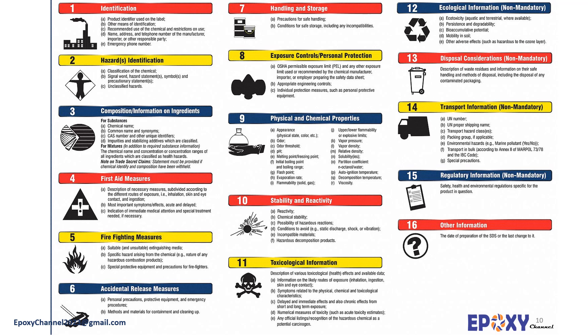Toxicological information is provided in section 11. Information on toxicological effects is presented in this section. Section 12 depicts ecological information, for example toxicity, persistence and degradability, bioaccumulative potential, mobility in soil, results of PBT and vPvB assessment, and other adverse effects are presented here.